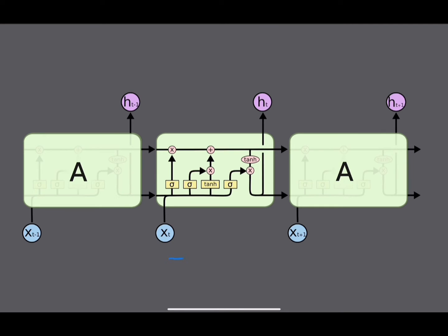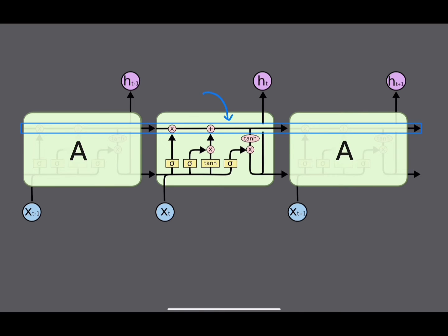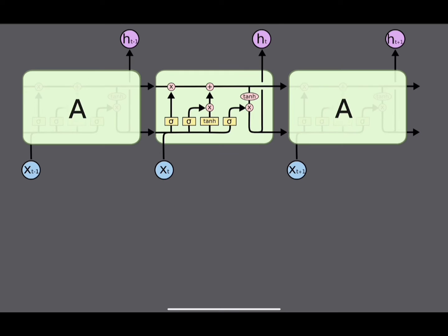That's where LSTMs come in. Now let's dive into these symbols and break down how they work. The fundamental difference between a normal RNN and an LSTM is what's going on inside this box. The general idea of passing information from previous time steps, getting an output, and passing those into later time steps remains the same. One of the core concepts behind LSTMs is the cell state — a line that runs through all the time steps.